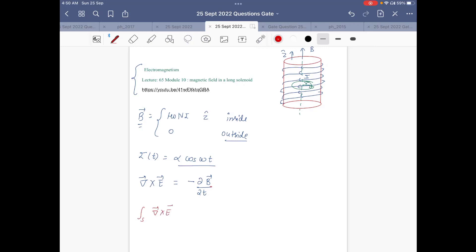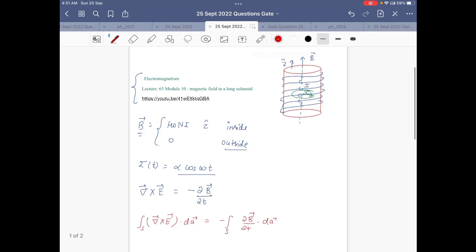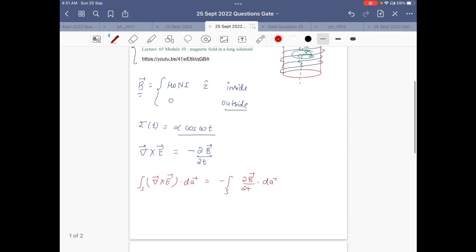So if we take the surface integral on both sides, we are left with surface integral of curl of E dot dA equals minus surface integral of ∂B/∂t dot dA.